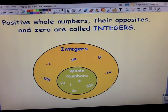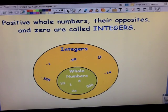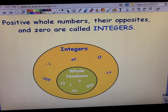Positive whole numbers, their opposites, and zero are called integers. So in elementary school we've dealt with whole numbers: 1, 2, 3, 4, 5, 6, 7, 8, 9, 10 and so on, and zero. Now we're going to start dealing with integers, which are the negatives or the opposite of the whole numbers. So integers are basically zero, positive, and negative numbers.